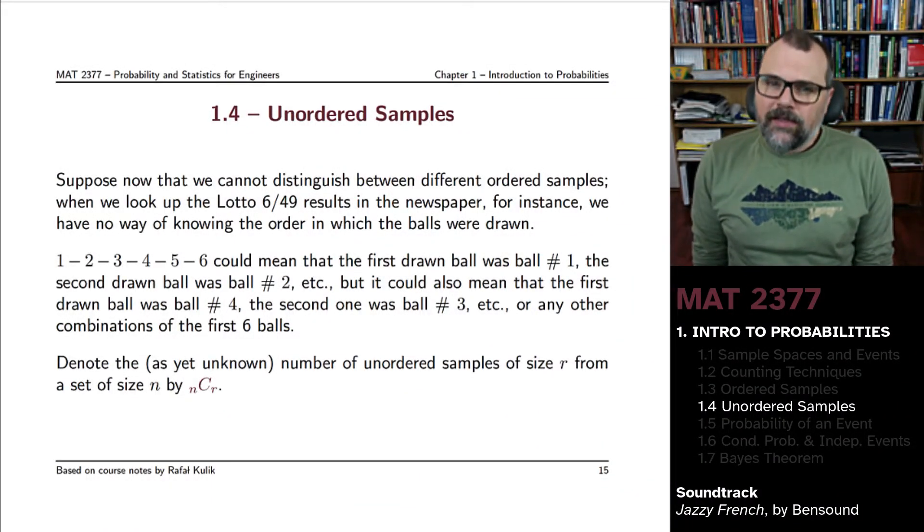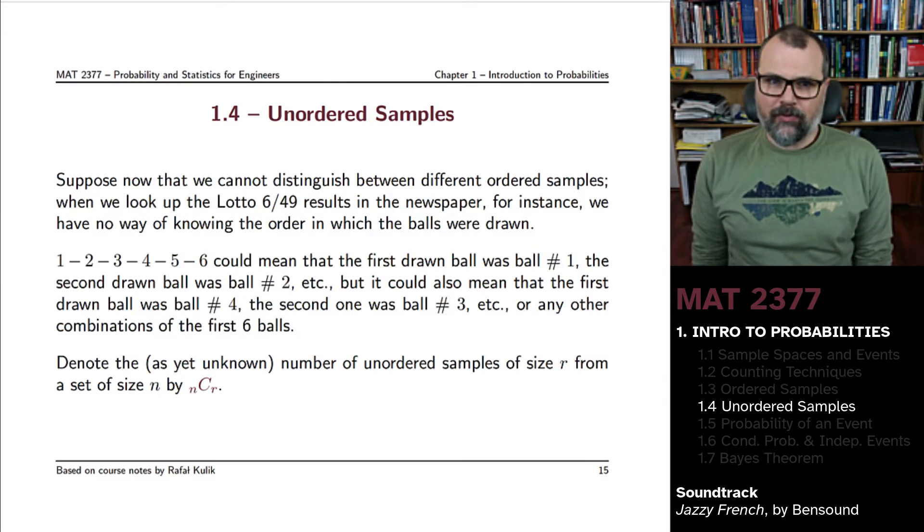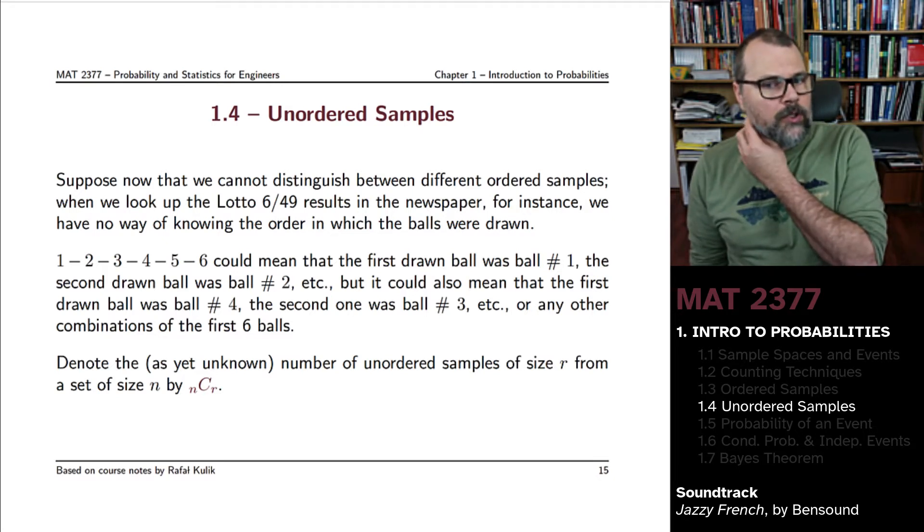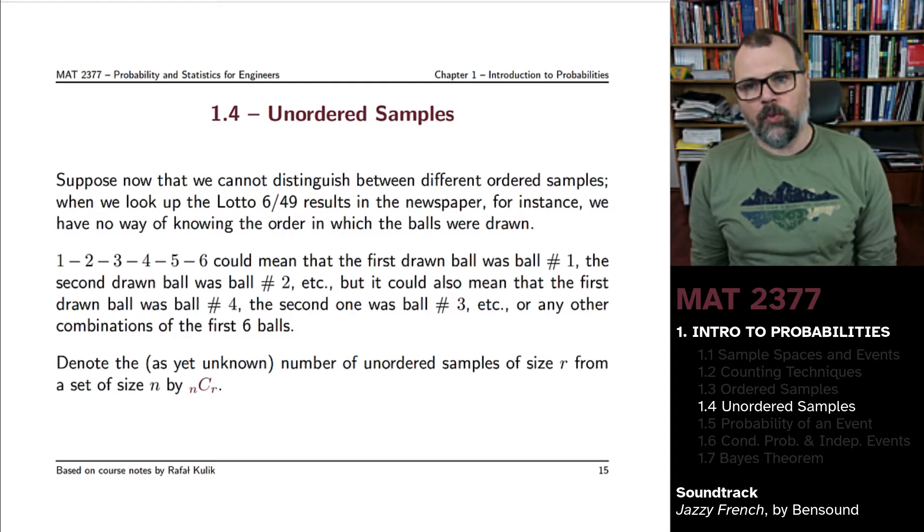In many instances we can't distinguish between the different ordered samples. If you were to look up the results of the Lotto 6/49 draw in the newspaper, it doesn't tell you in which order the balls were drawn. It just tells you what the six balls that were drawn were.